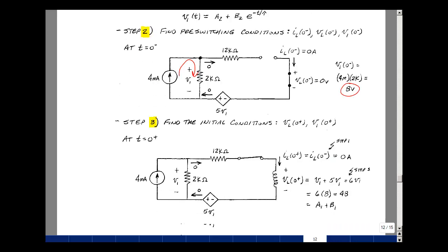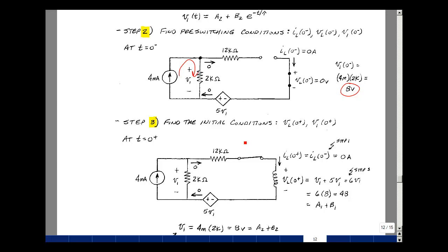Step three is to find the initial conditions. Switch changes state, goes from an open to a short, but the current that was flowing in here was zero prior to that switch closing, and so it must still be zero just after the switch closes. So that's equal to zero. Now given that that current is zero, that same current flows in this loop. So there's no drop across here. So we go around the loop then, we can solve for the voltage across the inductance. So the rise in voltage would equal the drops around the loop. So I've got zero here plus v1 plus 5v1. That gives me 6v1.